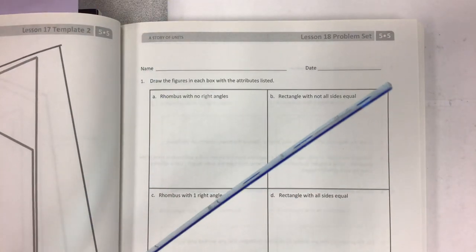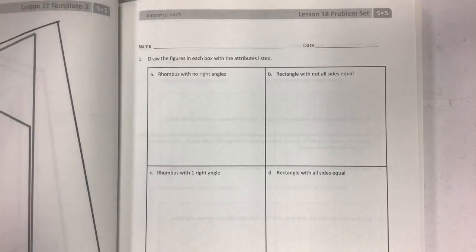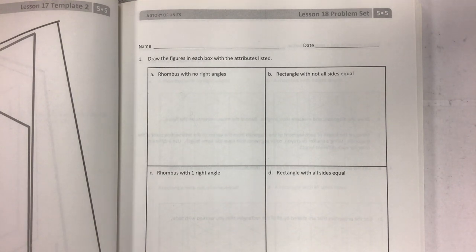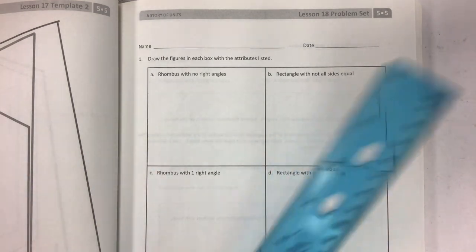The objective for today, always on the bottom of the page, you can look at it. Lesson 18 is to draw rectangles and rhombuses to clarify their attributes and define rectangles and rhombuses based on those attributes. So you're going to learn by doing. Let's get started.